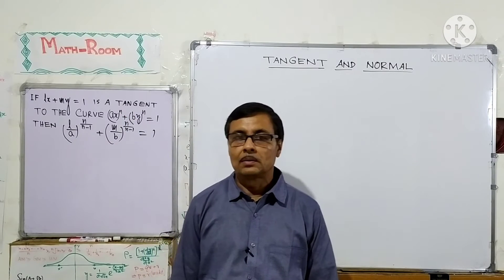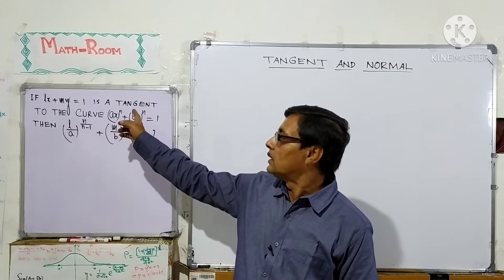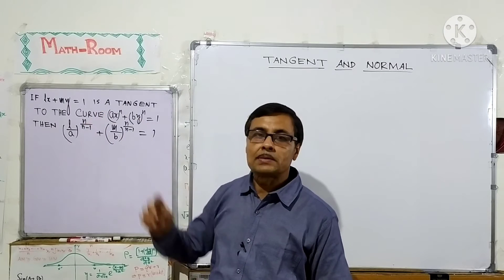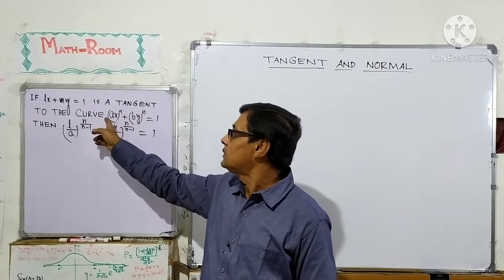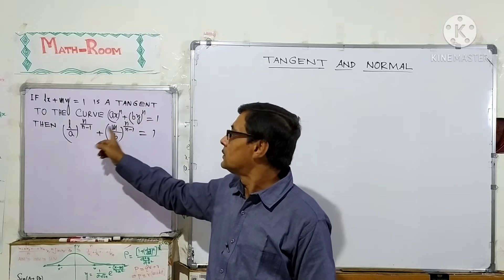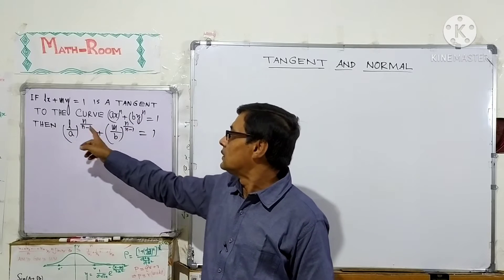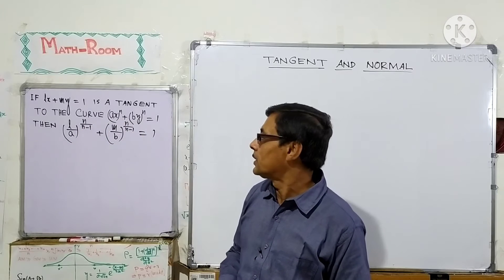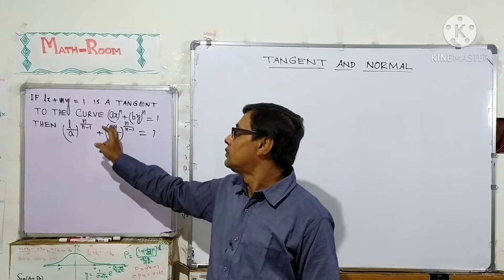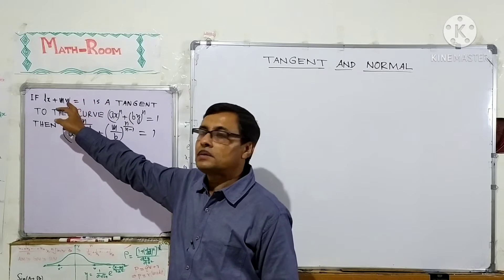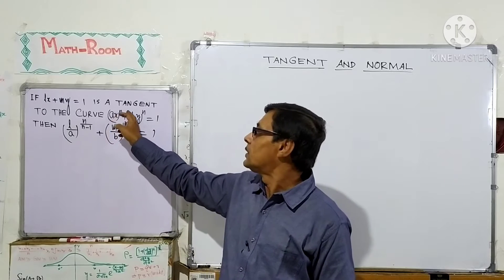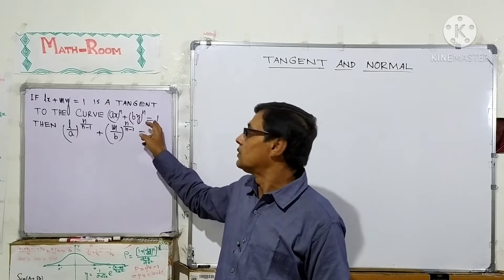A problem is taken from the chapter on tangents and normals. The problem is: if Lx plus my equals 1 is a tangent to the curve Ax to the power n plus By to the power n equals 1, then we have to prove that L over A to the power n over n minus 1 plus m over B to the power n over n minus 1 equals 1.